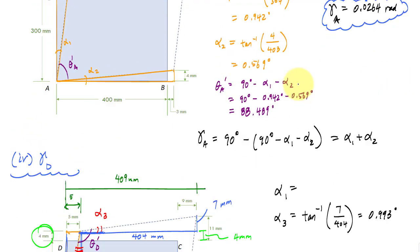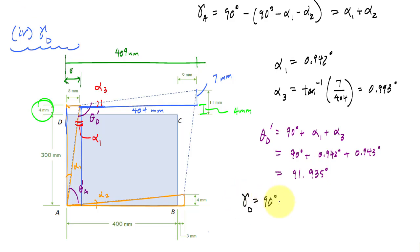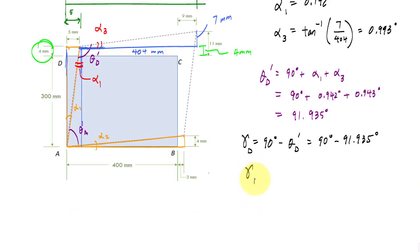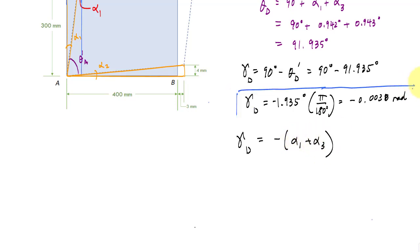We know alpha 1 is 0.942 degrees. Since the angle opened up, theta D prime equals 90 plus alpha 1 plus alpha 3, which is 91.935 degrees. Using the shear strain definition, gamma D equals 90 minus theta D prime, giving negative 1.935 degrees. The negative indicates the angle opened from 90 degrees. Converting to radians gives negative 0.0338 radians. Equivalently, gamma D equals negative (alpha 1 plus alpha 3), with the negative sign because the angle opened up.